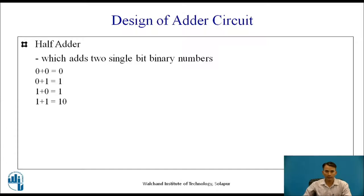Before designing the half adder, one should know binary arithmetic. The binary addition rules are: 0 plus 0 — sum is 0, with no carry; 0 plus 1 — sum is 1, with no carry; 1 plus 0 — sum is 1, with no carry; but when it is 1 plus 1 — sum is 0, with carry 1.